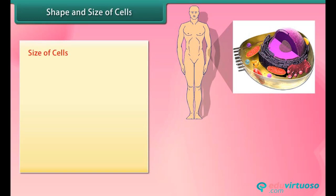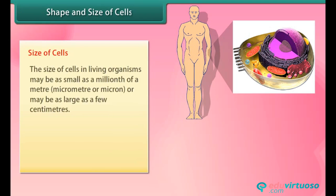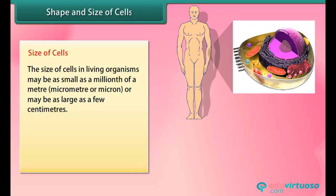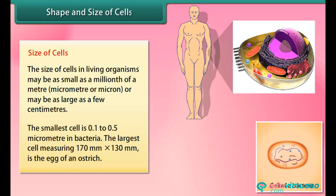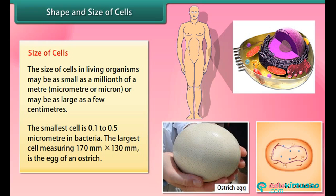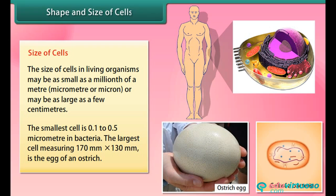The size of cells in living organisms may be as small as a millionth of a meter — a micrometer or micron — or may be as large as a few centimeters. The smallest cell is 0.1 to 0.5 micrometer, found in bacteria. The largest cell, measuring 170 mm by 130 mm, is the egg of an ostrich.